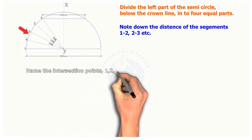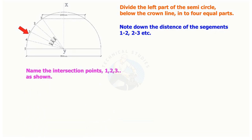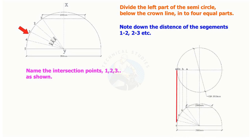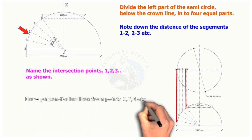Name the intersection points one to five as shown. Draw perpendicular lines from points one to five, intersecting the centerlines of the top circle.